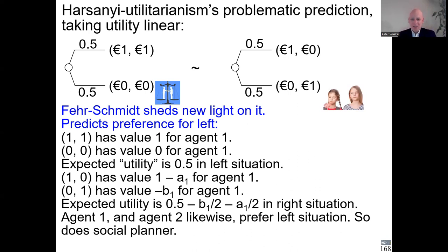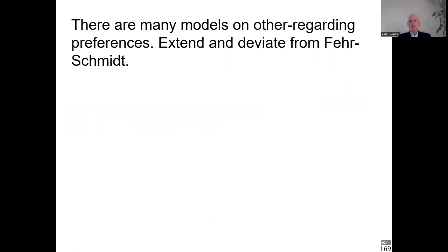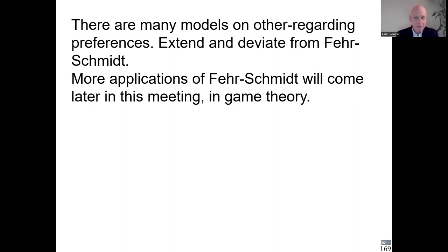The Fehr-Schmidt model can very easily accommodate inequality aversion, which Harsanyi's model did not. Harsanyi could respond that if inequality makes agents unhappy, the utility of x1 should be less than one — but then his model becomes less tractable. Regardless, with Fehr-Schmidt you can readily model inequality aversion that is empirically realistic and normatively desirable. There are other competing models of inequality aversion we won't discuss. Later in this course there will be an application of Fehr-Schmidt to game theory. Now we end chapter six and move to chapter seven.